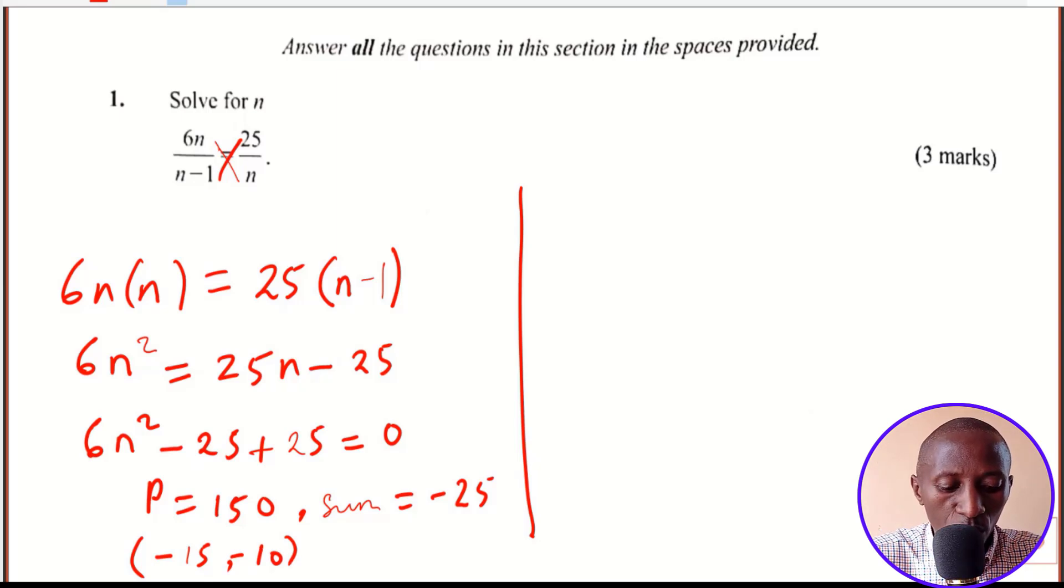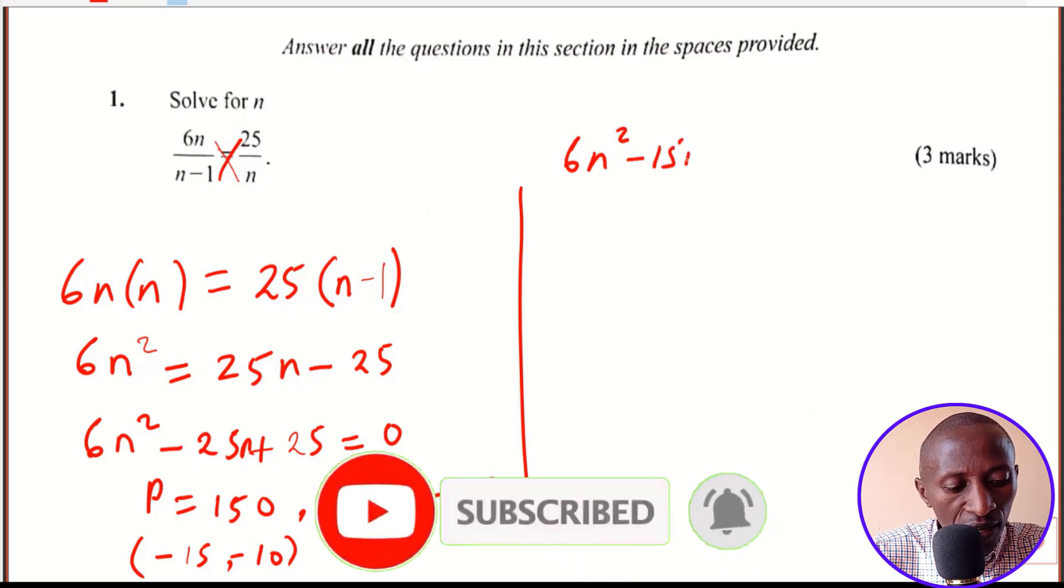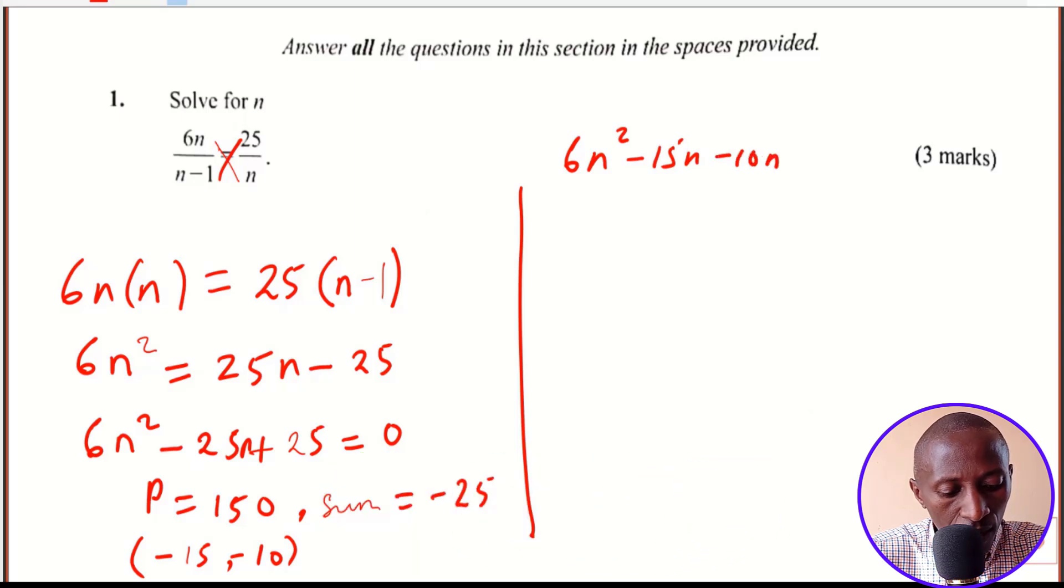These two we substitute them in the equation whereby we replace the middle term negative 25n, and that gives us 6n squared minus 15n minus 10n plus 25 is equal to 0.